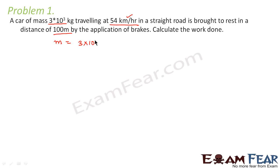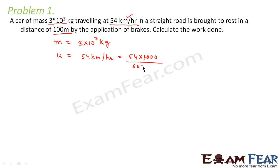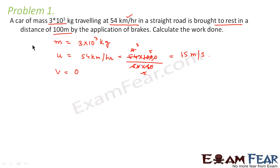The quantities given are: mass M = 3×10³ kg; initial velocity = 54 km/h, which converts to 54×1000 ÷ (60×60) = 15 m/s. Final velocity is 0 because the car is brought to rest. The distance S = 100 meters.